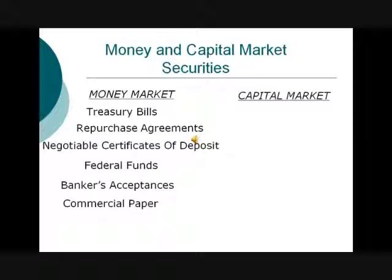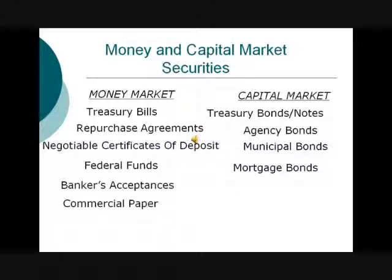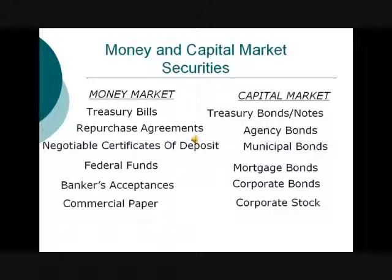Now let's talk about the capital market. The government, individuals, and firms need to raise long-term cash for long-term projects — to build factories, build roads, etc. The Federal Government issues treasury bonds and notes. There are also agencies to help facilitate mortgage transactions and other agencies in the Federal Government that issue bonds. Municipal bonds allow states and localities to find long-term debt for building schools and roads. Mortgage bonds are issued to help individuals pay for real estate. Corporate bonds allow high credit rating corporations to raise long-term funds in the capital market to purchase long-term capital. Corporate stock helps facilitate shareholder purchases of corporate assets. Now let's go to the Internet and find those securities.